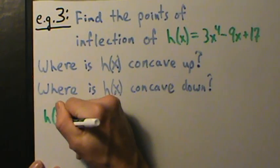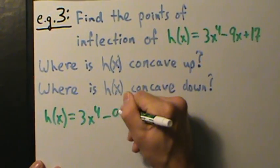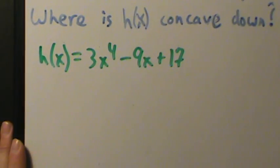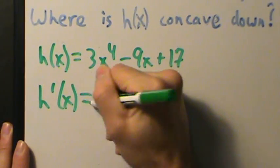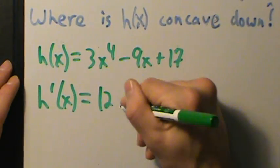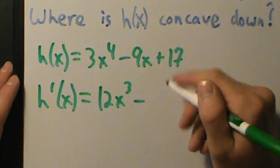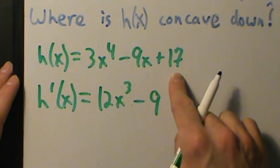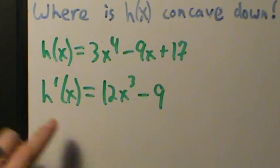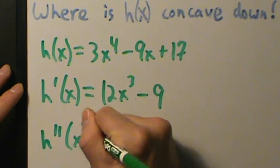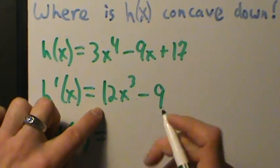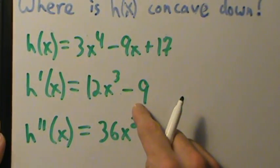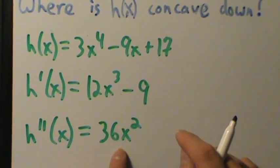h of x equals 3x to the 4th minus 9x plus 17. So the derivative h prime of x equals 3 times 4x cubed, which means 12x cubed, and then minus 9 — since minus 9x has derivative minus 9 — and plus 17, that's just a constant so its derivative is 0. Now we want the second derivative, so we take the derivative again. This becomes 12 times 3x squared, or 36x squared. And minus 9 is just a constant, so its derivative is 0. So h double prime of x is just 36x squared.